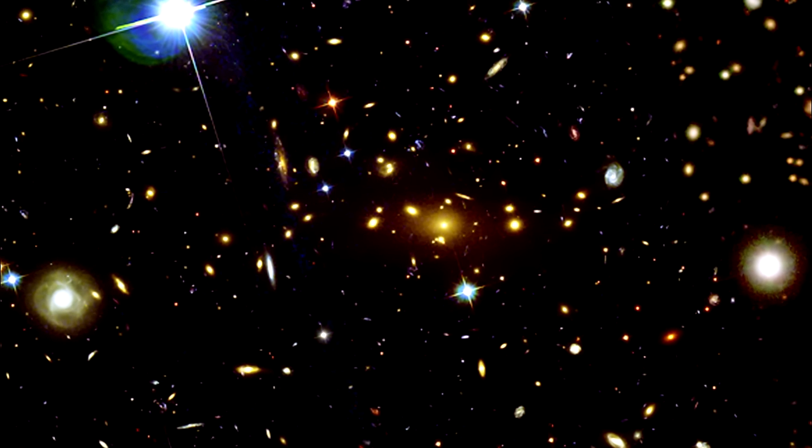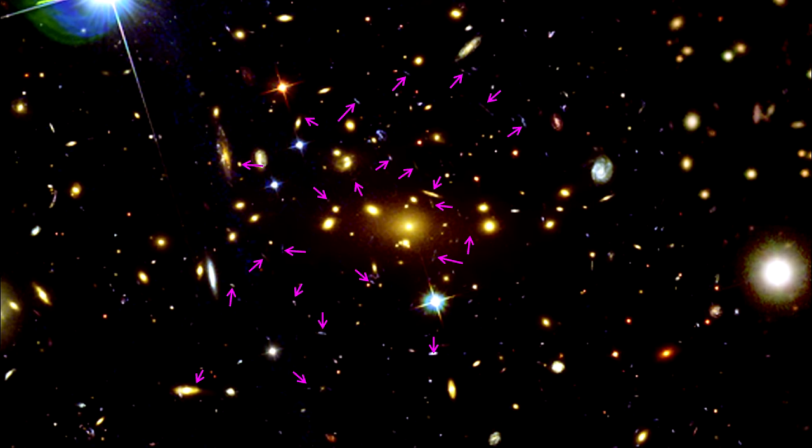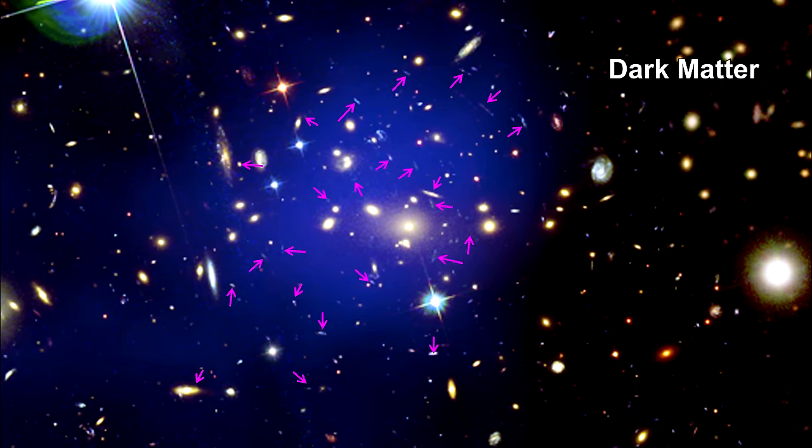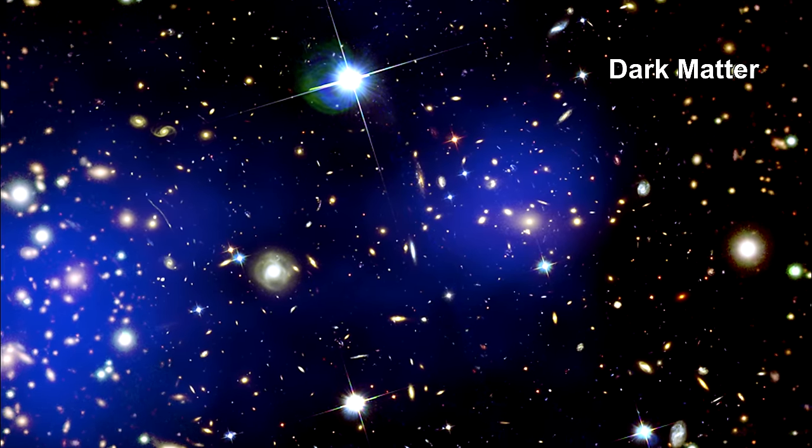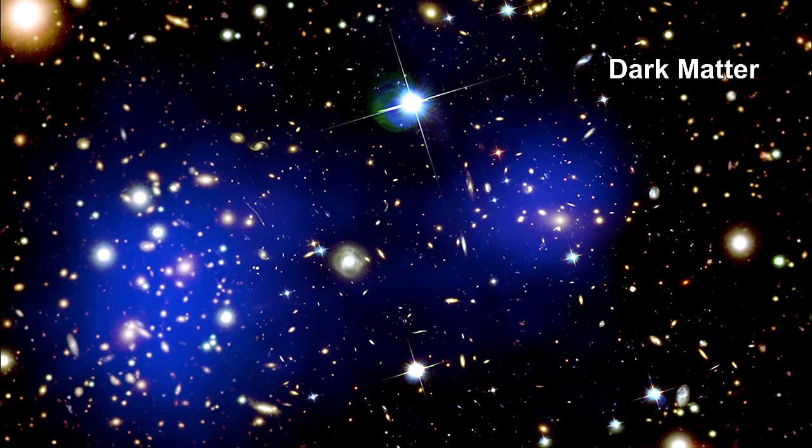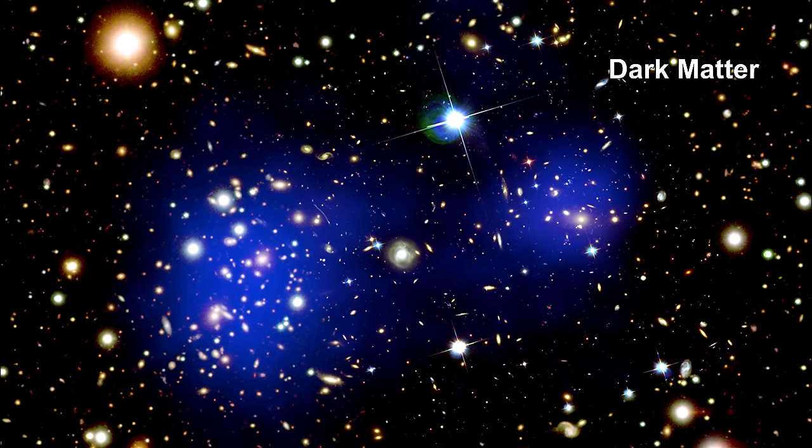If we zoom in a bit closer, we can see the telltale arcs of more distant galaxies lensed by the gravity of the Bullet Cluster. Counting the lensed objects and the estimated amount of light bending involved for each one, a map of the area containing most of the mass of the cluster can be superimposed. We have used blue to indicate the locations where the vast majority of the matter must be located in order to get the observed lensing.